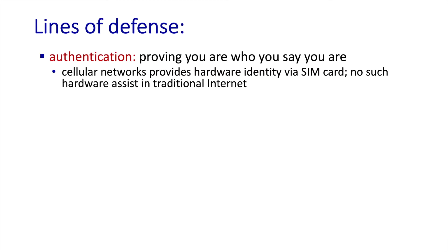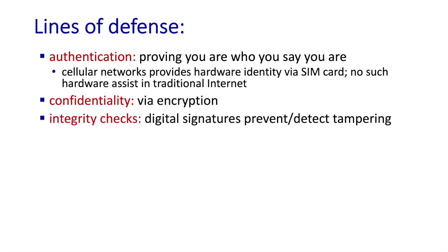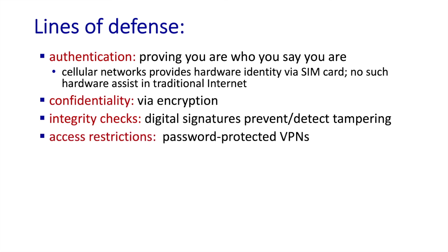To protect against these attacks, we can use several defenses. We can protect against spoofing by using authentication—forcing users to prove who they are before accessing a network service; a password is the simplest form, and a SIM card provides hardware identity and authentication. We can protect against sniffing by encrypting packet contents, and against tampering by using digital signatures, which allow a receiver to verify that data was sent by a given digital identity and hasn't been tampered with en route. We can also add access control to prevent unauthorized use of network resources.